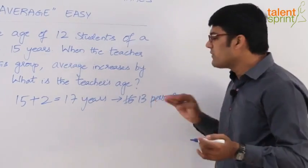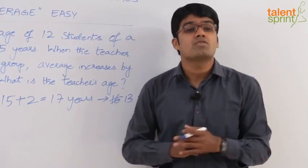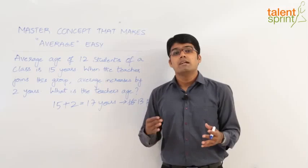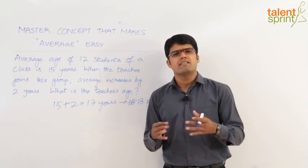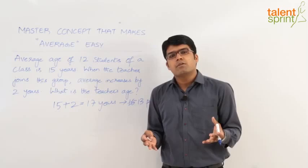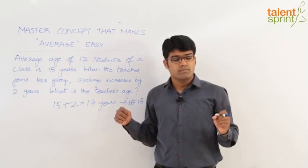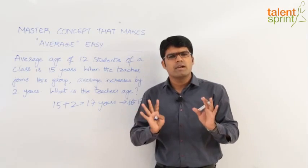So for 13 persons the average is 17 years. What does it mean? Each of the persons here is 17 years old. Equal distribution. Very well we know that teacher's age will be much more than 17. It cannot be 17 years. But going by our understanding of equal distribution, we can say all the 13 persons here are 17 years old. Now we need to calculate the teacher's age.